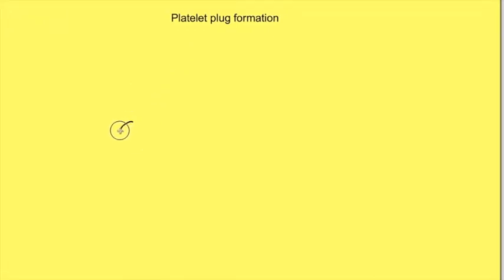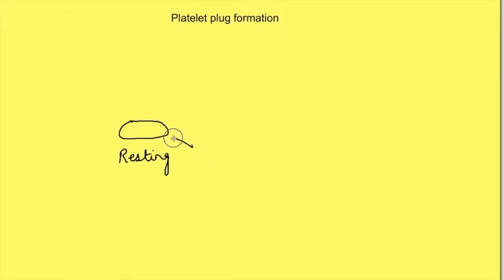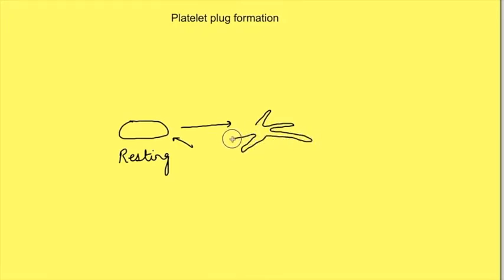Normally, platelets in circulation are disc-shaped in resting condition. These platelets can change their shape and release the contents of their granules when stimulated — this is known as platelet activation. Upon activation, the platelet spreads out and forms many pseudopods.